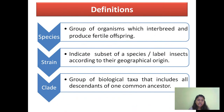These are the definitions. Species are nothing but a group of organisms which have the capacity to interbreed and produce a fertile offspring. We can define strain as the subset of a species. For example, if a fungus is considered as a species, then Metarhizium anisopliae can be considered as its strain.